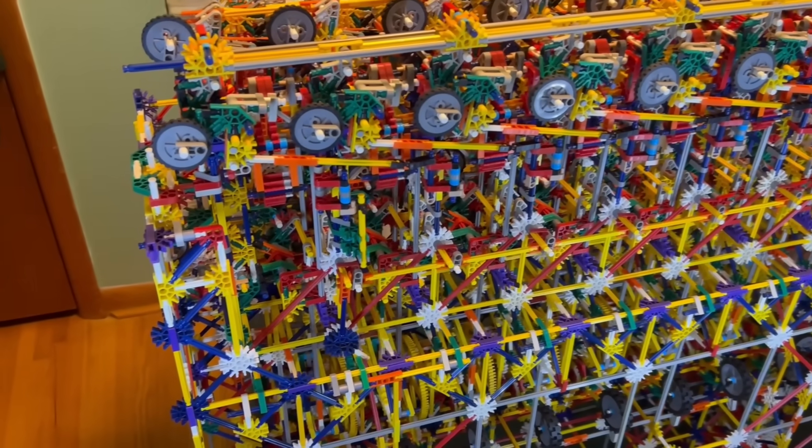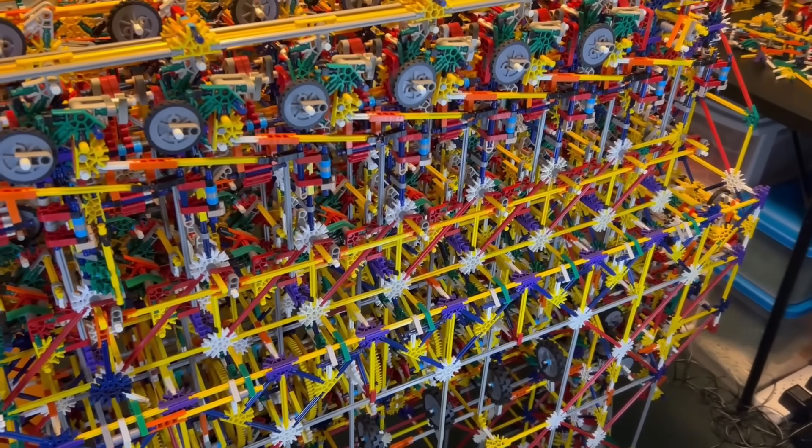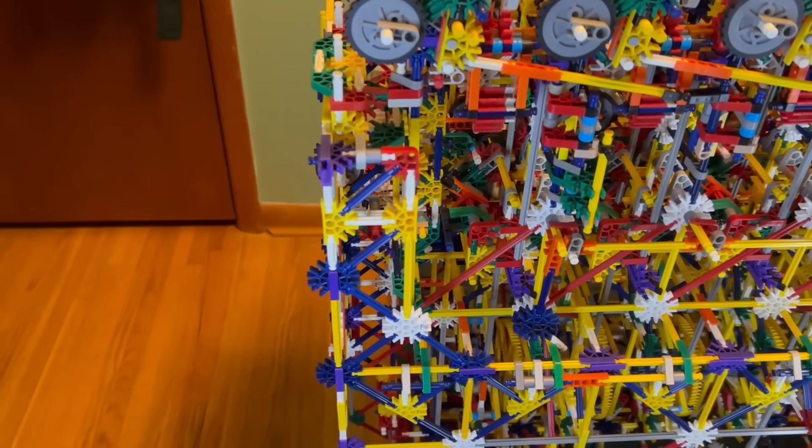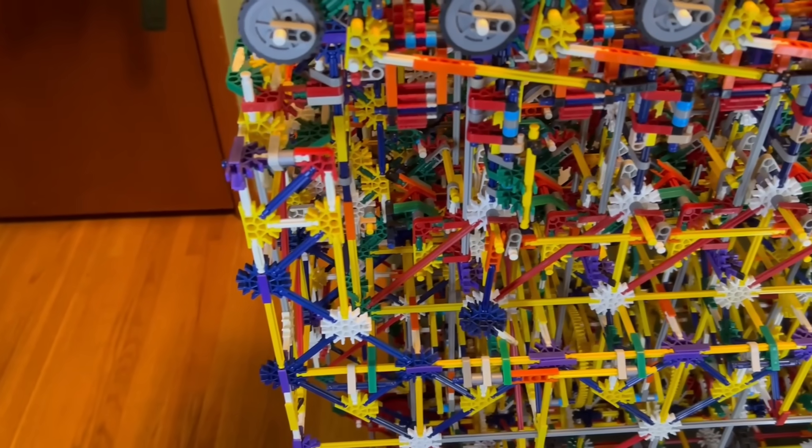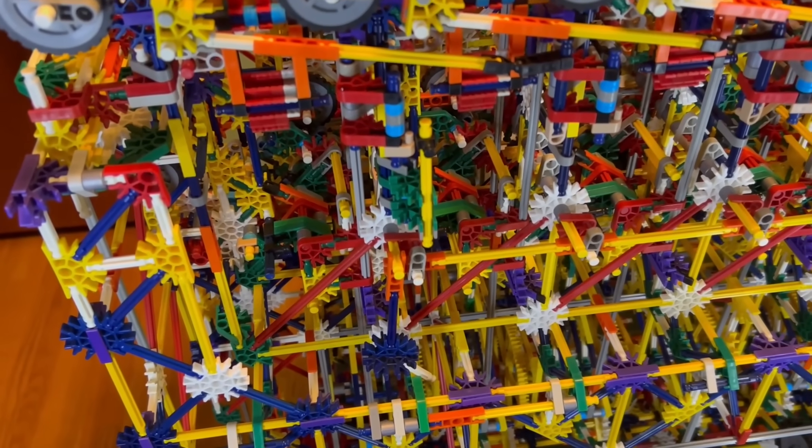The way the ALU adds two numbers column to column is pretty much just like what we all learned in elementary school where you start with the first column, you get your first digit as the sum, and if there's a second digit that just goes as a carry to the next column.